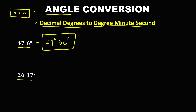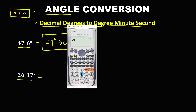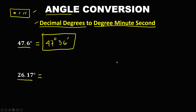For the next given, 26.17 degrees, convert to degrees, minutes, and seconds. Input 26.17, then press degree-minute-second, then equals. The result is 26 degrees, 10 minutes, and 12 seconds.